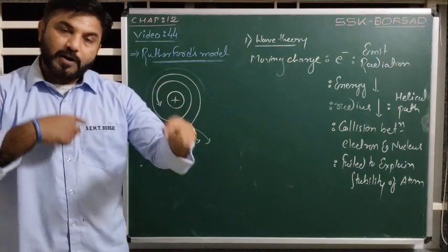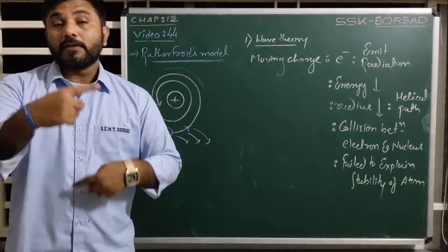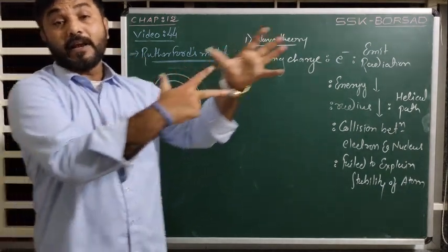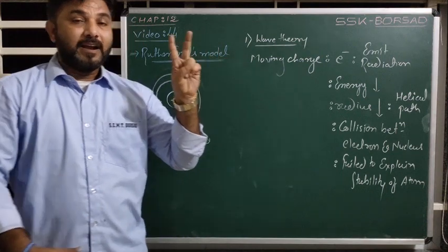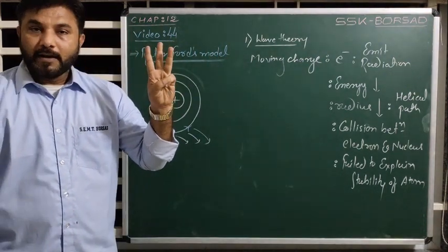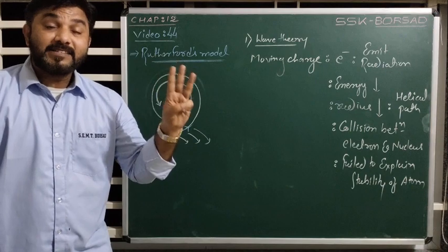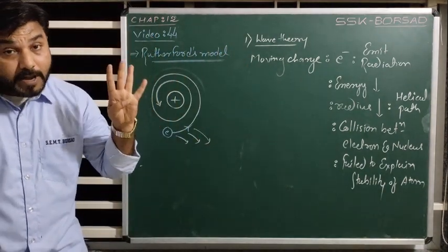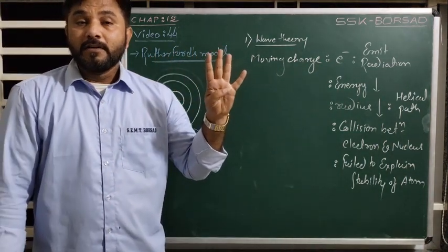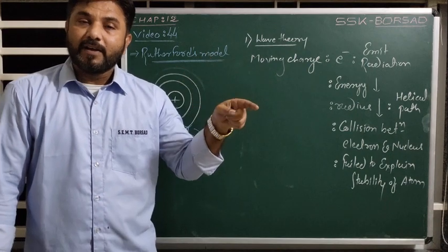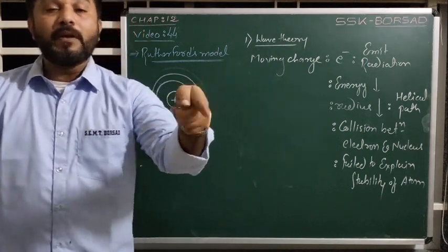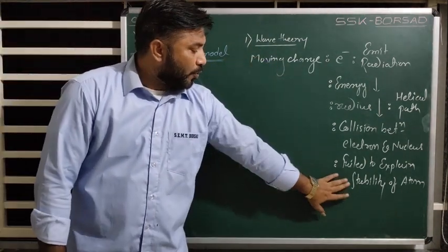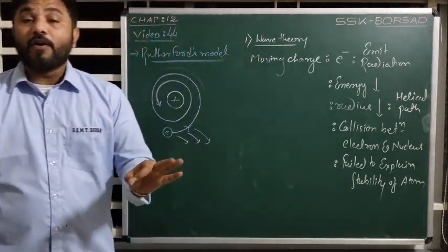According to Rutherford, electrons are moving in a circular path. But a moving electron, being a moving charge, emits radiation in all directions. So the electron's energy decreases, radius decreases, and the path, instead of being circular, will be helical. There may be a collision between the electron and the nucleus, the nucleus becomes unstable, and the atom also becomes unstable. So Rutherford's atomic model failed to explain the stability of an atom.